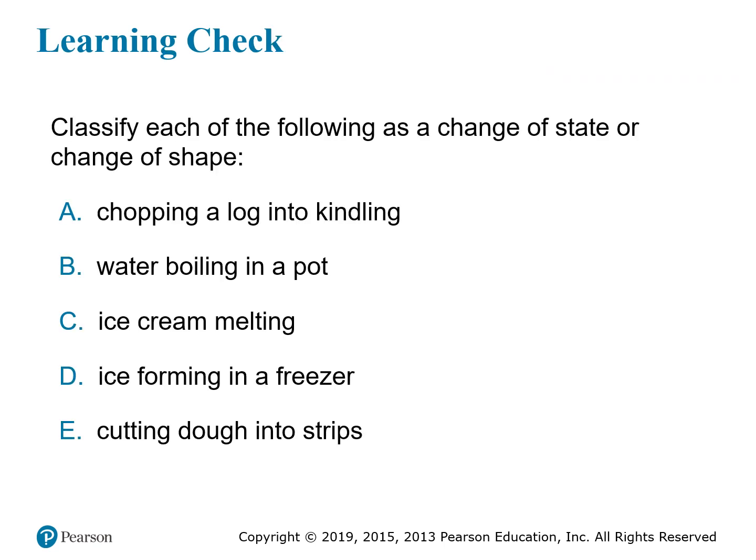These are examples of changes a substance might undergo, and we're asked whether each is a change of state or a change of shape. Chopping a log into kindling is just breaking it up into different shapes — not melting or freezing it — so this is a change of shape. Water boiling in a pot, going from liquid to vapor, is a change of state called evaporation or boiling. Ice cream melting is also a change of state — a solid melting into a liquid. Ice forming in a freezer is also a change of state, going from liquid and freezing into a solid. Cutting dough into strips is clearly a change of shape, not a change of state.